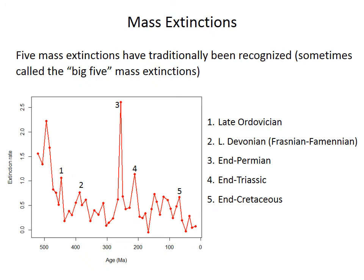Extinction rates fluctuate quite a bit, but there have been various time intervals when many species went extinct in a short period of time. Five of these intervals have been recognized as the so-called Big Five mass extinctions: the Late Ordovician Extinction; the Late Devonian, or Frasnian-Famennian Extinction, which is actually a multi-part event spanning several intervals; the end-Permian, the biggest of all time, eliminating more than 90% of marine species in less than a couple hundred thousand years; the end-Triassic Extinction; and the famous end-Cretaceous Extinction, which was actually a pretty severe crisis.